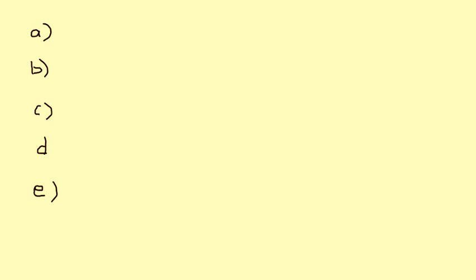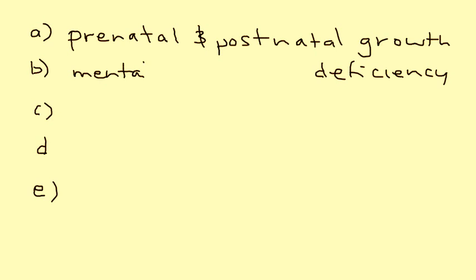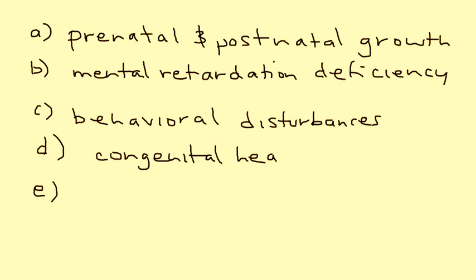Let's talk about some of the key things that will appear in clinical vignettes in terms of presentation. The first is either prenatal or postnatal growth deficiency — a child that is small for gestational age or of short stature after birth. Next is intellectual disability, usually described as mental retardation in a clinical vignette. Behavioral disturbances are also part of the presentation, and importantly, congenital heart defects — specifically VSD, ventricular septal defect.